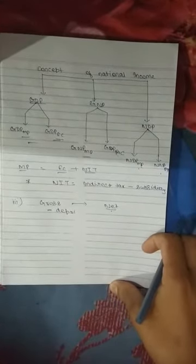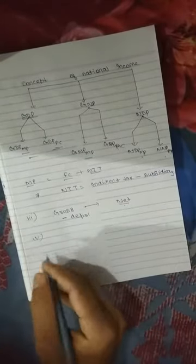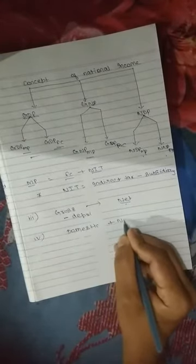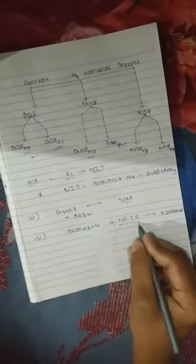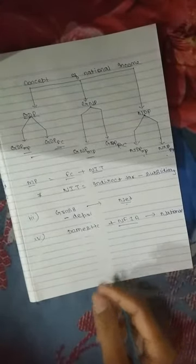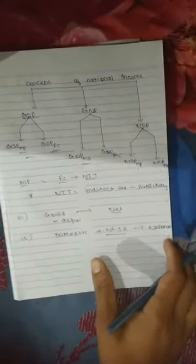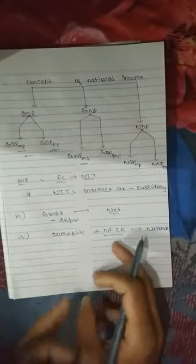When moving from domestic to national, we add NFIA — net factor income from abroad. NFIA is the difference between income earned by a normal resident from the rest of the world minus income earned by foreigners from our country. When we add NFIA to domestic, we get national product.